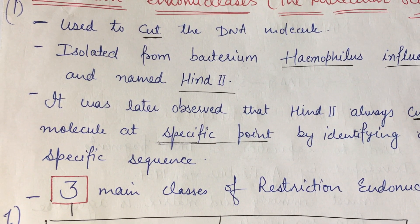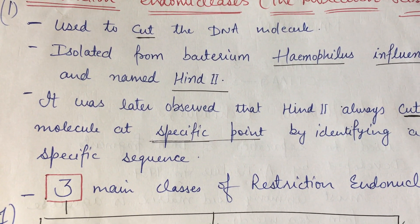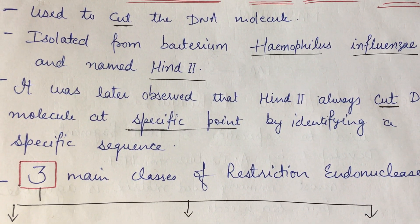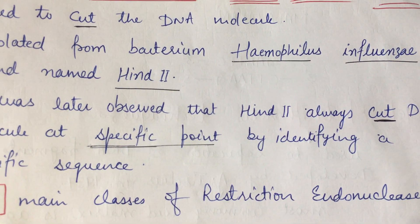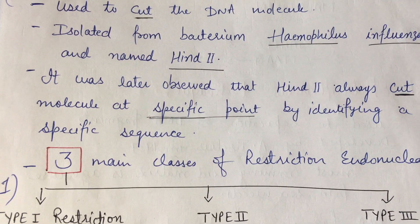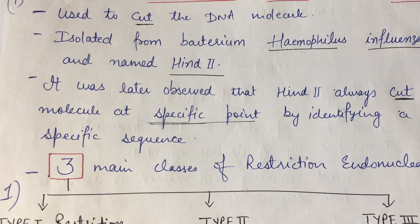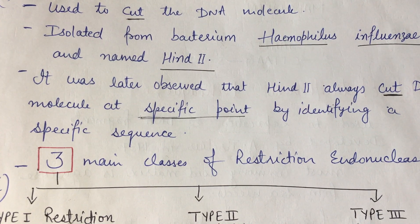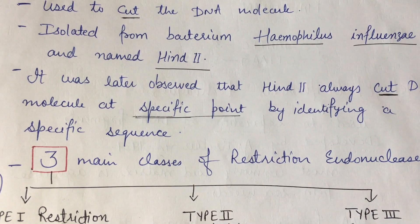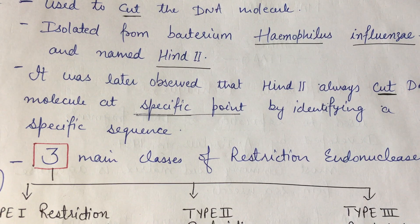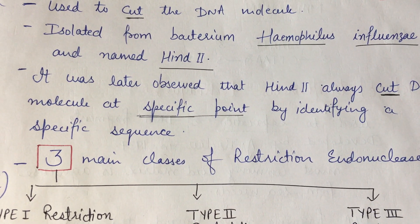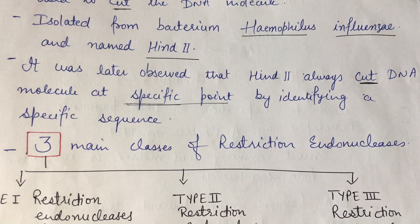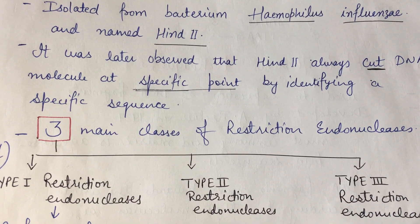The first restriction endonuclease enzyme was isolated from bacteria. That enzyme is called HindII. It was later observed that HindII always cuts the DNA molecule at a specific point by identifying specific sequences.